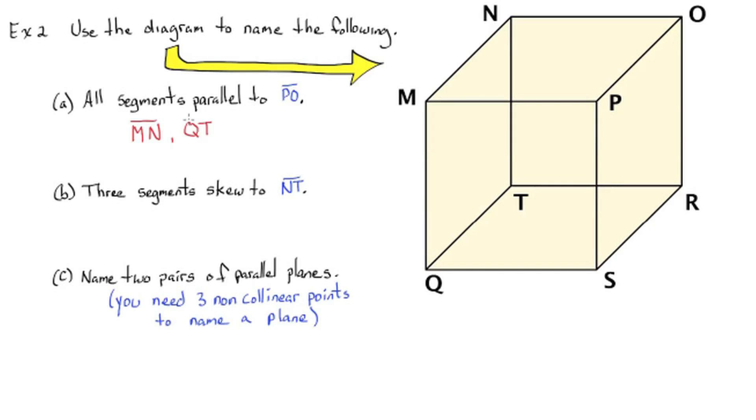Okay. So, we have segment MN, segment QT, and segment RS that are parallel to segment PO. And in part B, we have three segments skewed to segment NT. We have segment SR, PO, and QR. And in part C, two pairs of parallel planes. We have plane MNO is parallel to QTS, and plane NQT is parallel to POS.